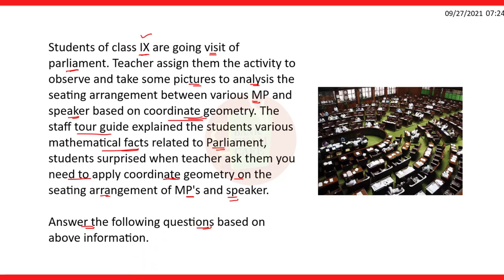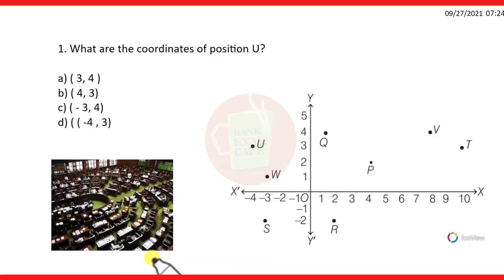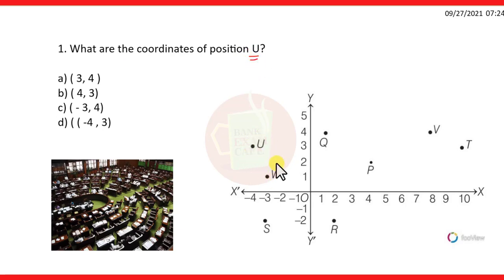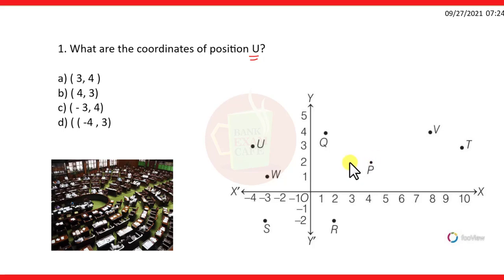The first question on screen: what are the coordinates of position U? There is one MP sitting at position U, someone at position W, someone at position S, someone at position P, and so on. We have to find the coordinates of position U.